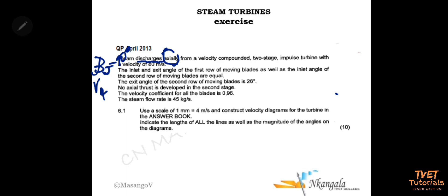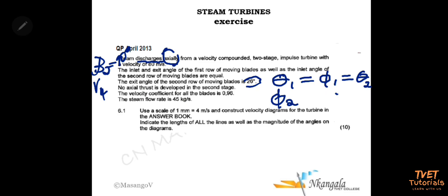The inlet and exit angles of the first row of moving plates, as well as the inlet of the second row of moving plates, are equal. So theta 1 equals phi 1, which also equals theta 2. They are telling us these angles are equal but not giving us the value, so we treat them as unknown for now. The exit angle of the second row of moving plates is 26 degrees — that is phi 2 equals 26 degrees.